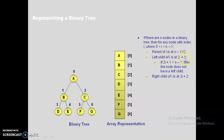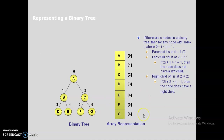The left child is at index 2i plus 1. For example, if i is 0, then 2 times 0 plus 1 equals 1, so the left child is at index 1. The right child is at 2i plus 2. If 2i plus 1 or 2i plus 2 is greater than n minus 1, then the node does not have a left child or a right child — meaning if it reaches the maximum size, you cannot find a node at the left or right.